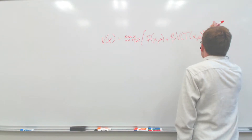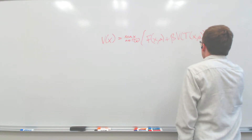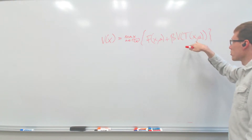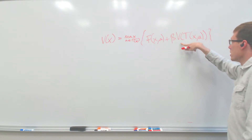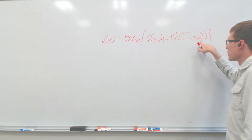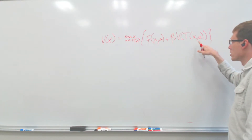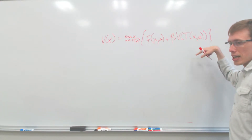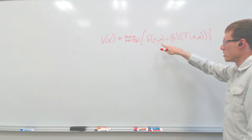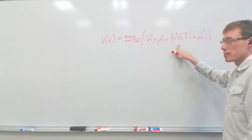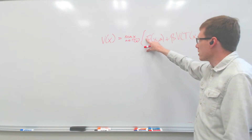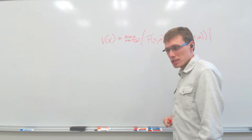You get some immediate value and some future value, given that you're optimizing given the new state you're in. This transition function, given the action and your current state, puts you in a new state — you calculate the value of that, discount it possibly, add on the immediate value, and then pick the action that maximizes that.